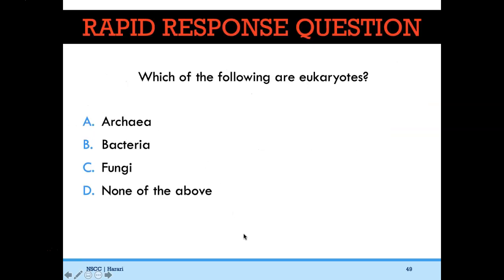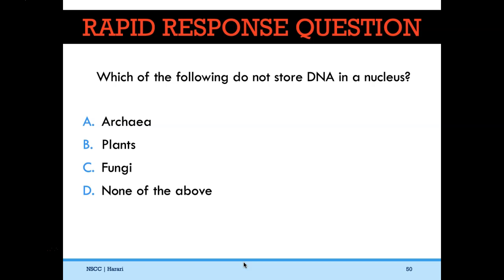Which of the following are eukaryotes? The answer is C, fungi — like a yeast cell is a eukaryote. Which of the following do not store DNA in the nucleus? The answer is A, archaea — those are prokaryotes. Here's a brief review of the characteristics of life, and now is a good time to pause before we move on to section 1.3, the process of science.